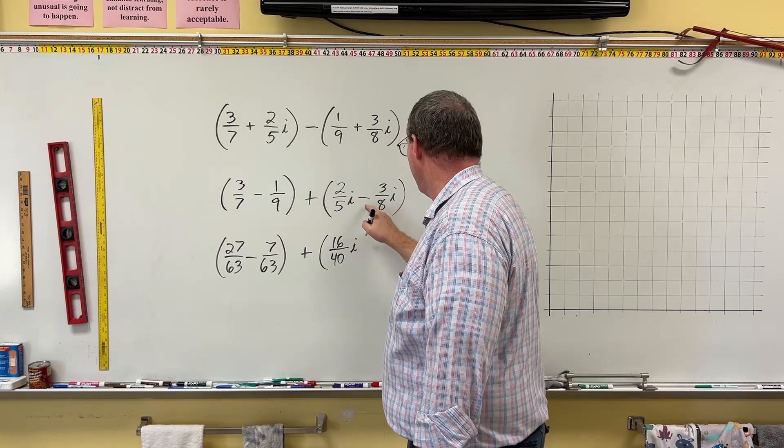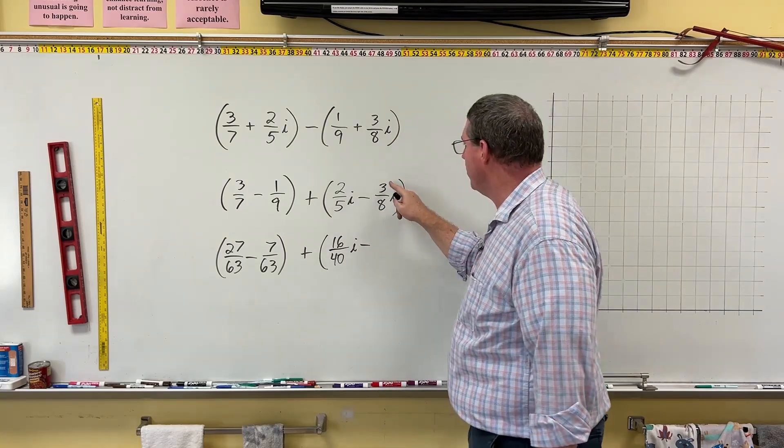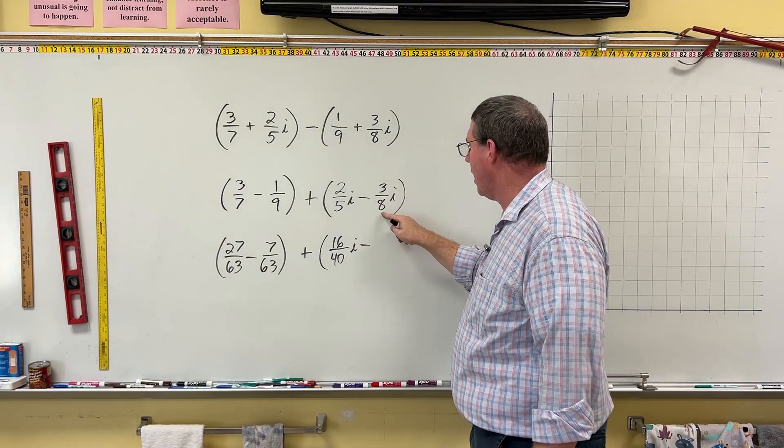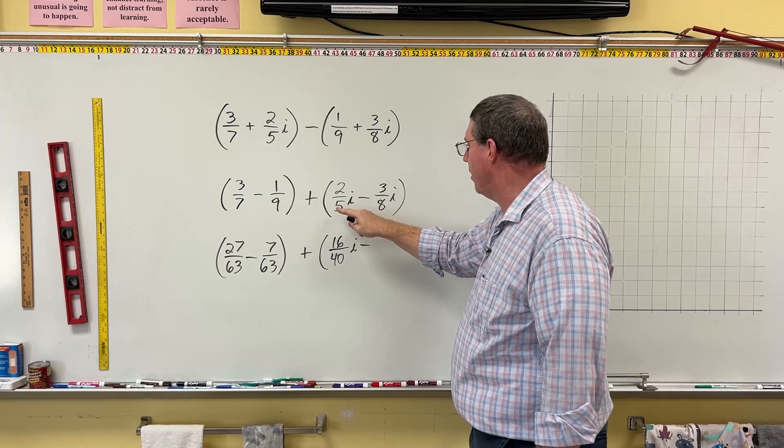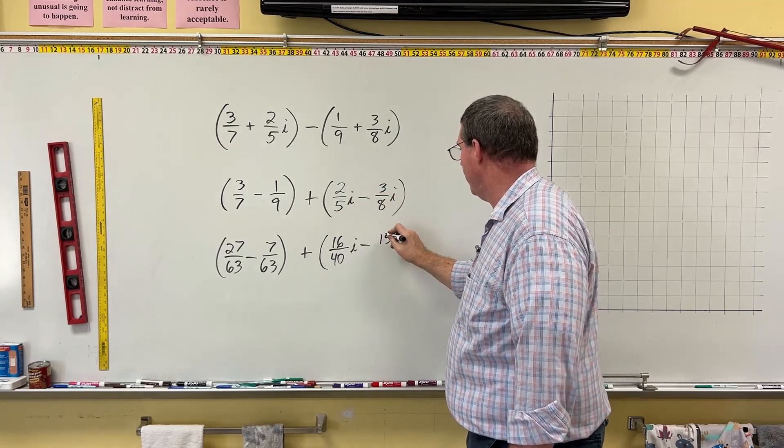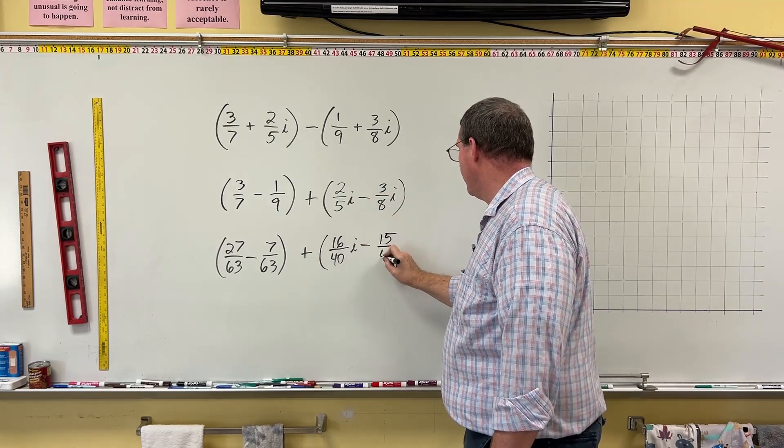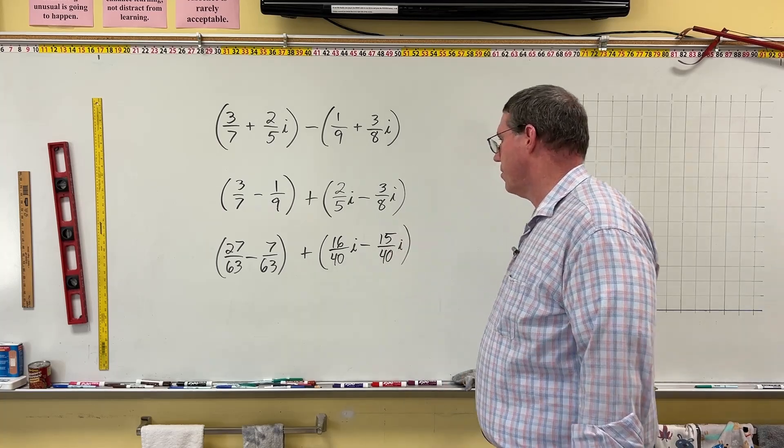Now we've got to change the 3 eighths, the 3 and the 8, by multiplying each of these by the 5. 5 times 3, that's 15, over 5 times 8, that's 40, put on an i, and it's the same thing.